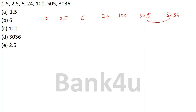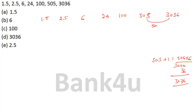How can 405 be made as 3036? So 405 plus 1 becomes 406... actually 505 plus 1 is 506. So 506 into 6: 6 into 500 is 3000, 6 into 6 is 36, so this gives 3036. Therefore 505 plus 1, that is 506 into 6 equals 3036. How can 100 be made as 505? Adding 1 to 100 gives 101 into 5 is 505. How can 24 be made as 100? Adding 1 to 24 gives 25, and 25 into 4 is 100.